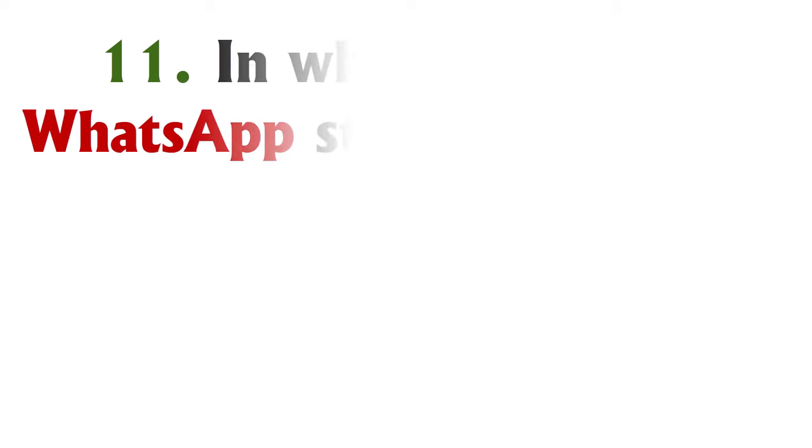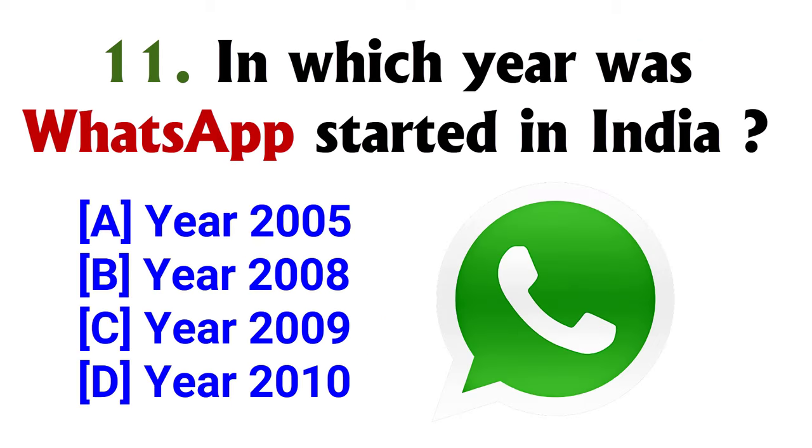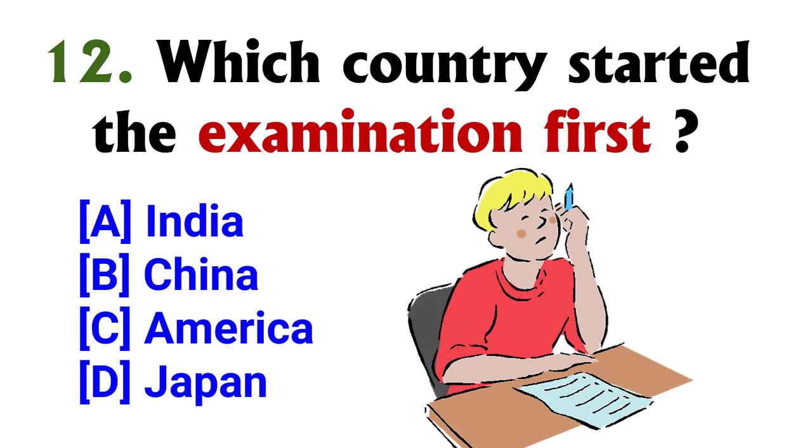In which year did WhatsApp start in India? Option D, 2010. Which country started the examination system first? Option B, China.